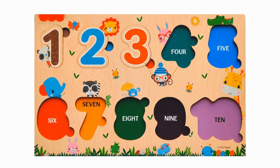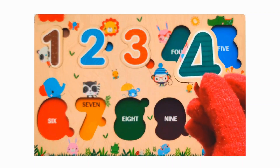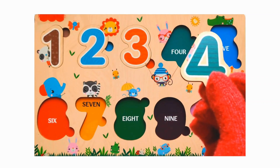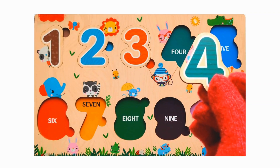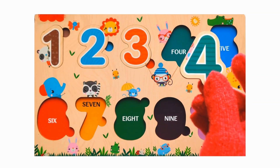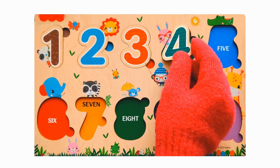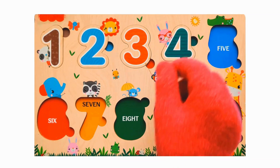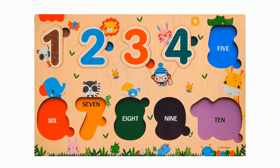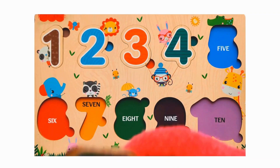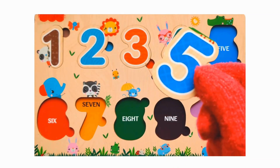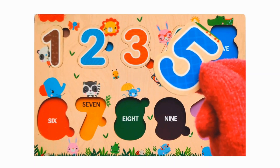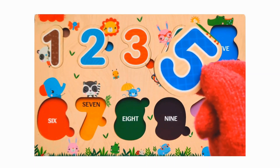Next number is Number 4. It's of dark green color. Next number is Number 5. It's of dark blue color.